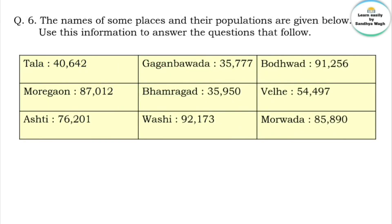Question 6: The names of some places and their populations are given in the table below. Use this information to answer the questions that follow.